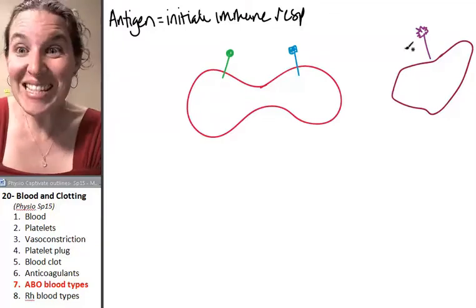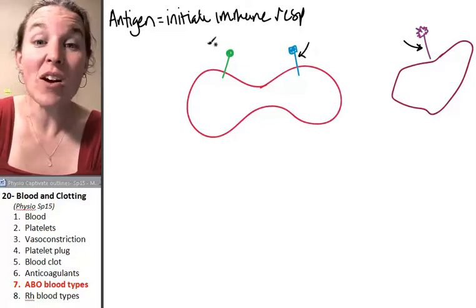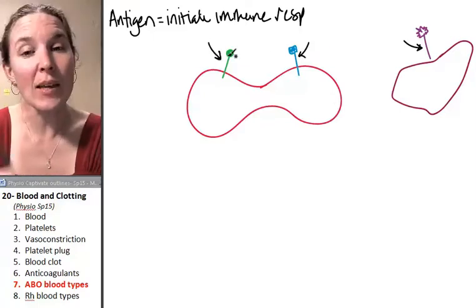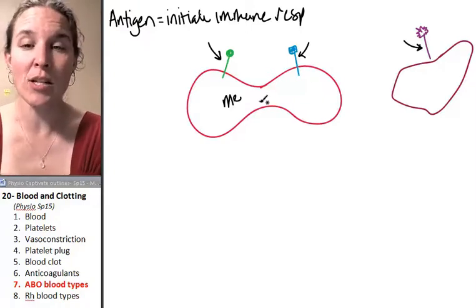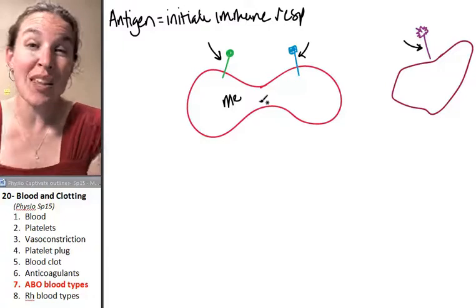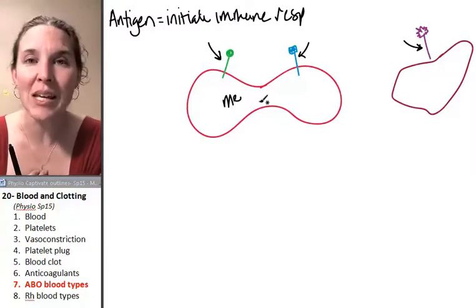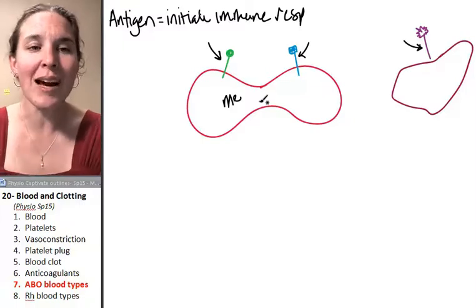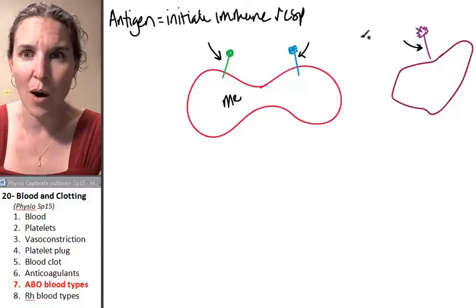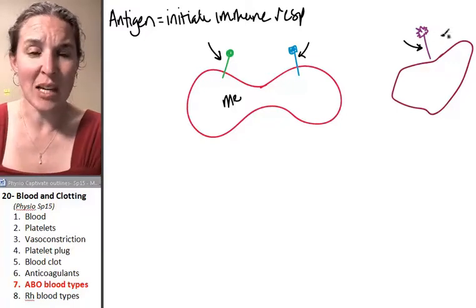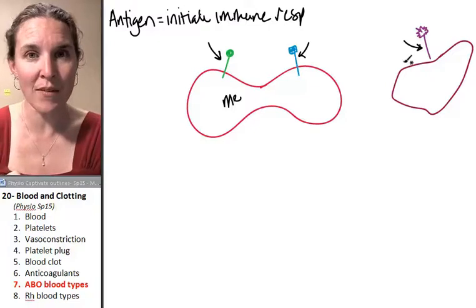So these things are antigens even when they're in us. These are my antigens. That's my red blood cell. Those are my antigens. And my body knows that they could initiate an immune response, but when they're in me, my body's like, I got you. You're part of me, and I will not initiate an immune response against you. However, that one, that's not me. I don't recognize it. Let's kill it.